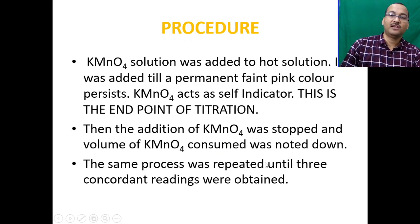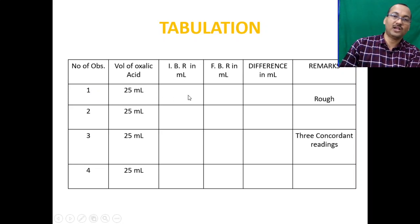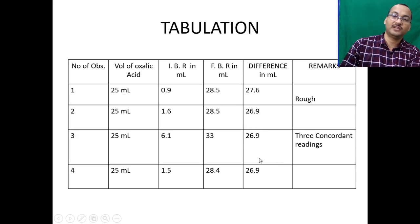Repeat the process until three concordant readings are obtained. Record the titration data in a table: volume of oxalic acid (25 mL), initial burette reading, final burette reading, and the difference. For example, a rough reading: initial 0.9, final 28.5, difference 27.6 mL. The concordant readings for three titrations each gave a difference of 26.9 mL. If readings differ, take the average.